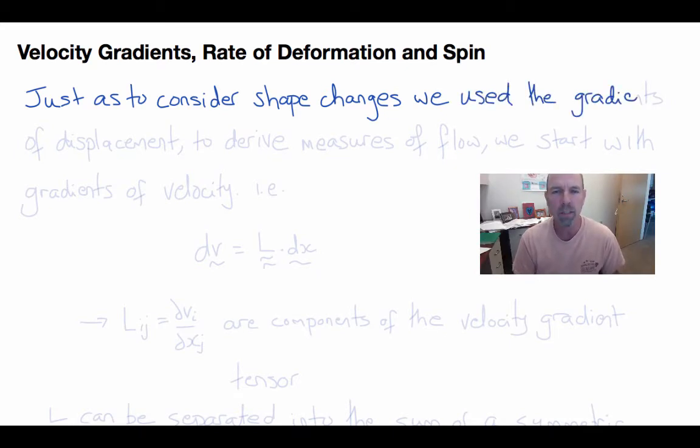If every point in the fluid had the same velocity, then the fluid really wouldn't be flowing. It would be like a milk truck driving along the freeway. Every particle in the milk would have a constant velocity, but the milk wasn't actually flowing. It was just undergoing a rigid body motion.